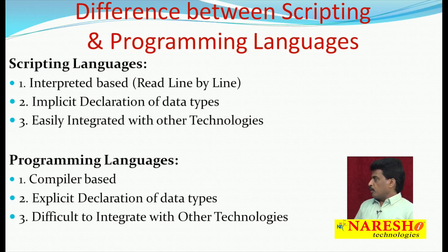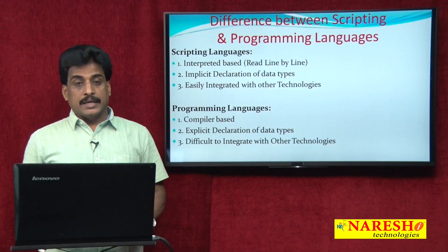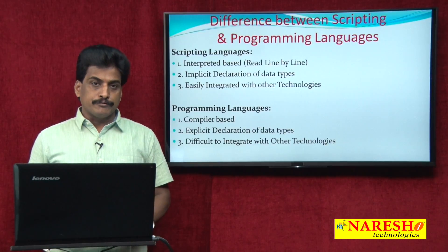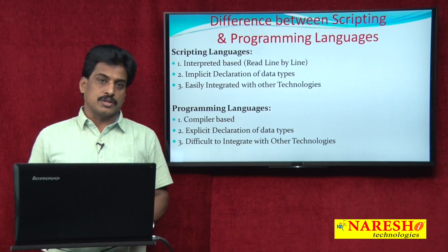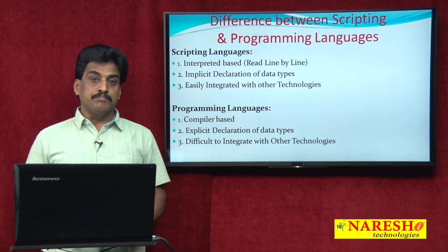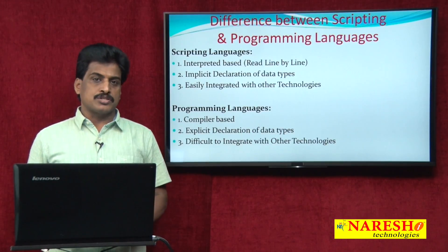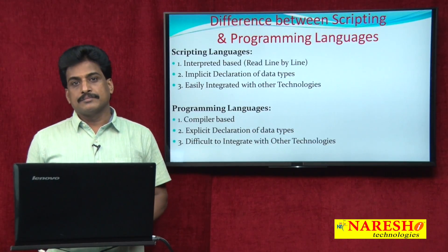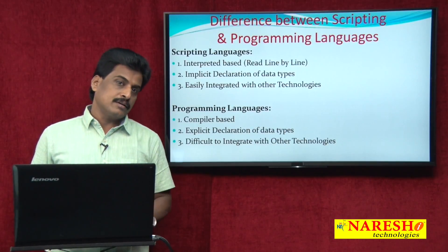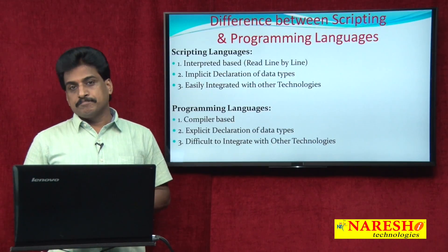The next point: in scripting, variable declaration is completely implicit — meaning dynamic declaration — so the programmer does not need to declare int, float, char, string, or double. This is called implicit variable declaration and all scripts follow this. In contrast, all programming languages use explicit variable declaration, meaning you must declare the data type externally, otherwise it gives an error.